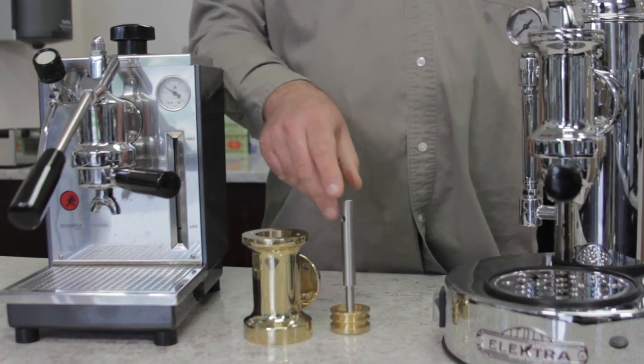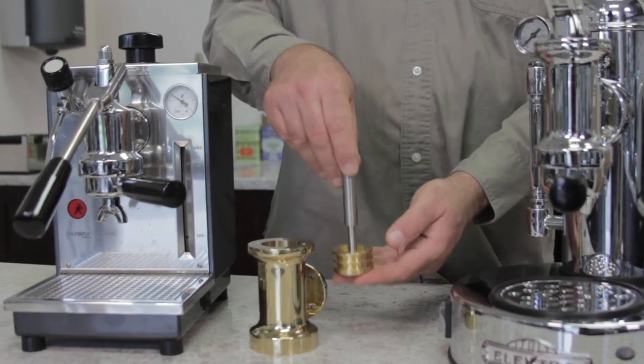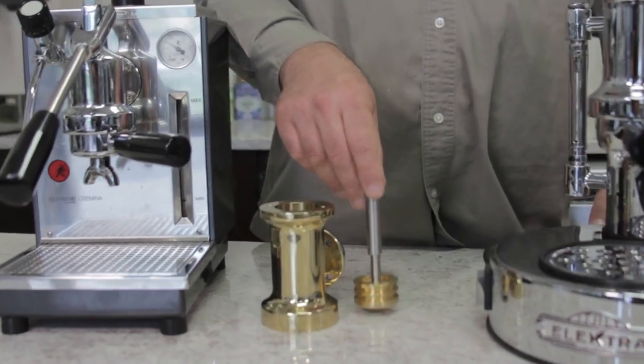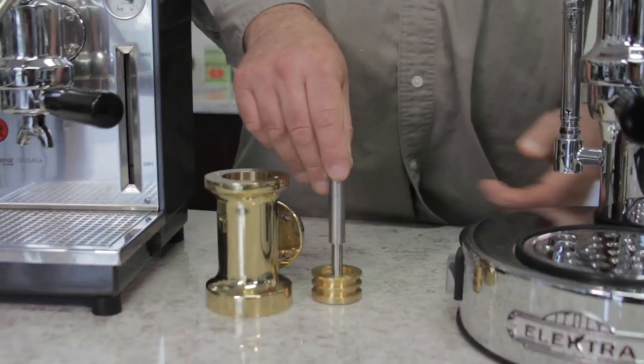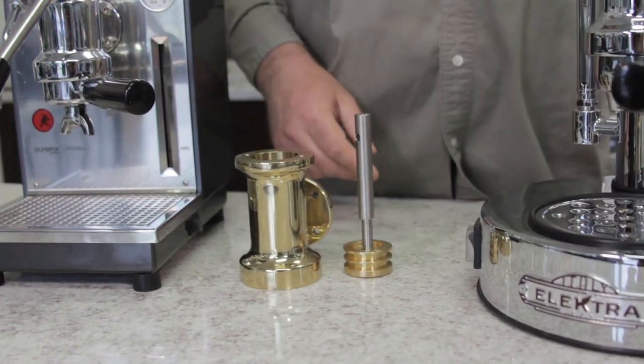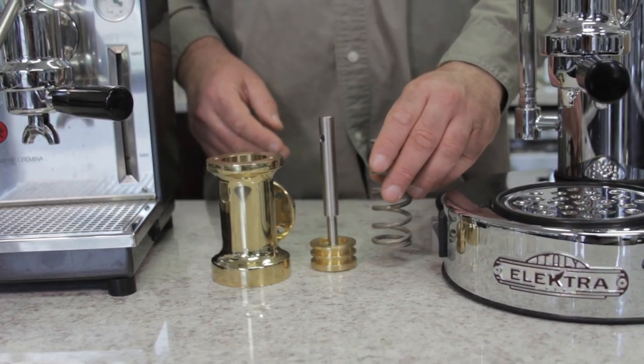When there is no spring, you're actually pushing down with your hand muscle, or arm muscle, to push the piston down. And that's basically the difference between the two internally, is one has the spring inside, and one doesn't.